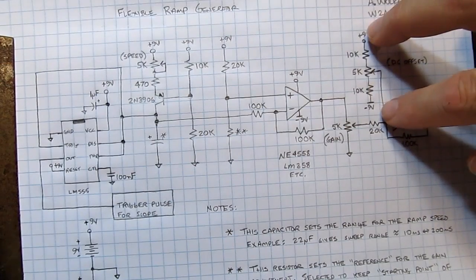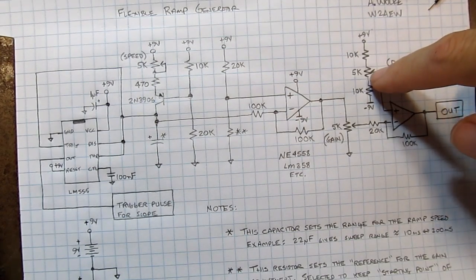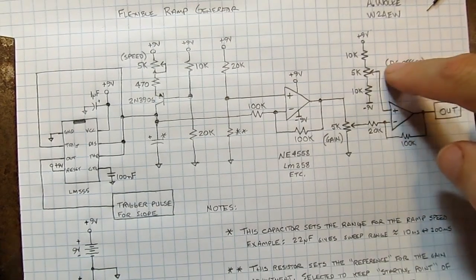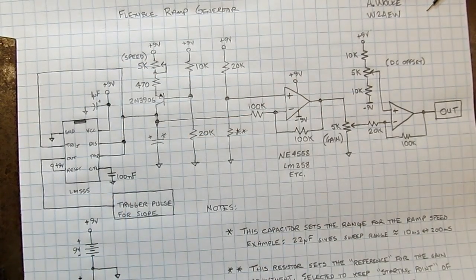And then I also have this bias string here between plus and minus nine volts. And I can adjust this pot up or down to adjust the DC offset. So there's the DC offset adjustment, the gain adjustment, and the sweep speed adjustment right there.